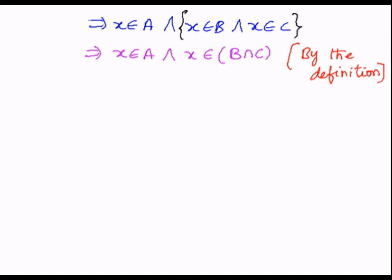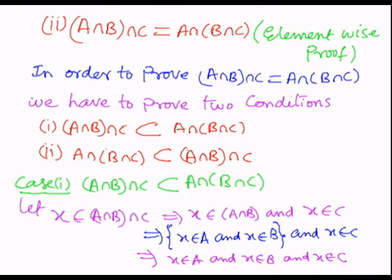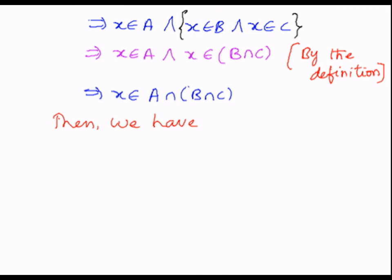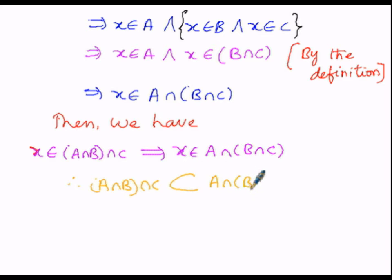The next logical step: that implies x belongs to A, and the bracket can be written as A intersection of B intersection C — by the definition of intersection of two sets. Therefore, x belonging to A intersection B intersection C implies x belongs to A intersection of B intersection C. The elements in the LHS are also elements of the RHS, so LHS is a subset of RHS. Therefore, A intersection B intersection C is a subset of A intersection of B intersection C.